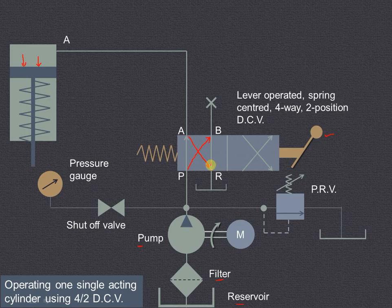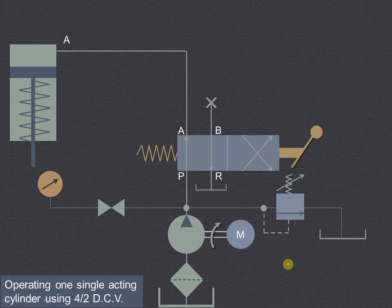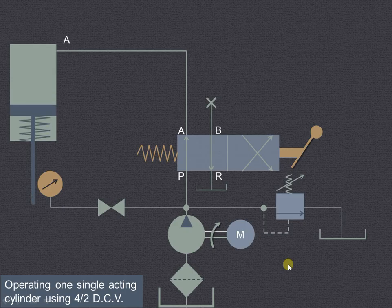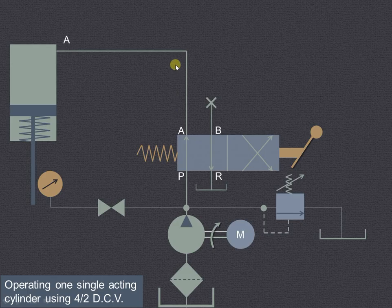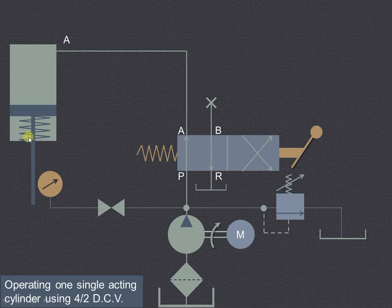So let us see with the help of animation how this particular circuit works. Just now we have seen that from P to A, then it will enter on the top side of the piston and will cause the piston to extend, thus compressing this particular spring.